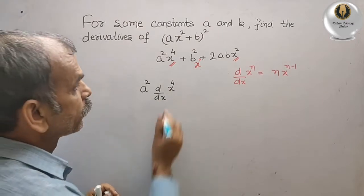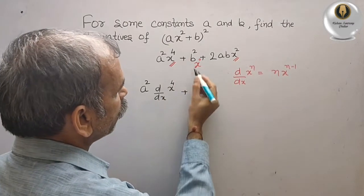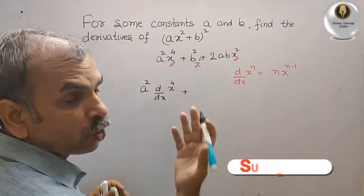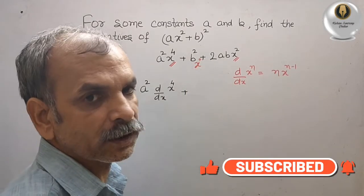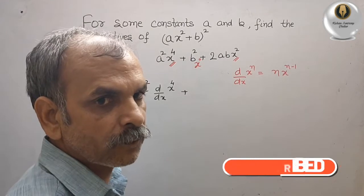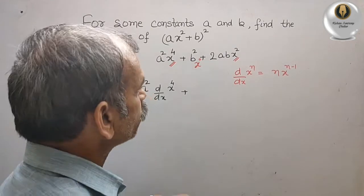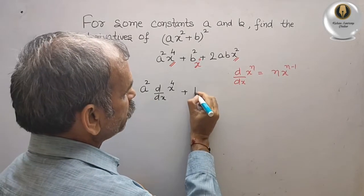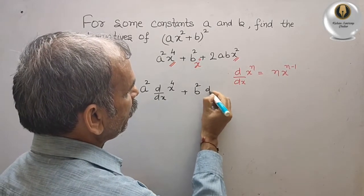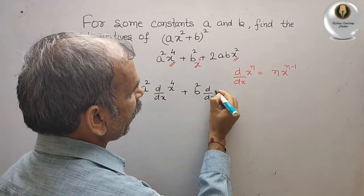Plus, now b² is constant and x to the power of 0 is also constant. Or you can write in this form also: b² and d/dx of x to the power of 0.